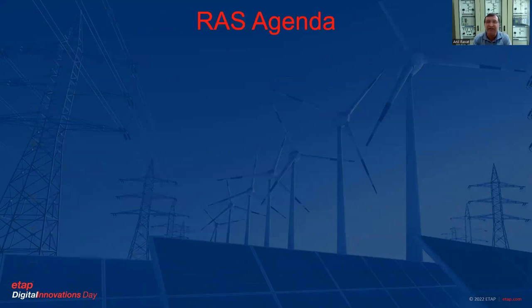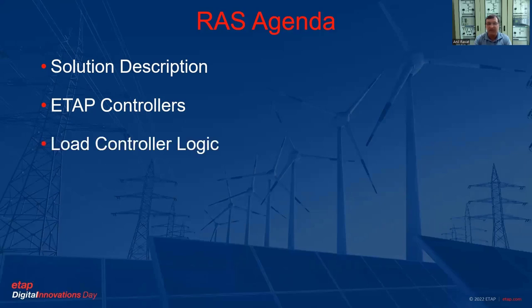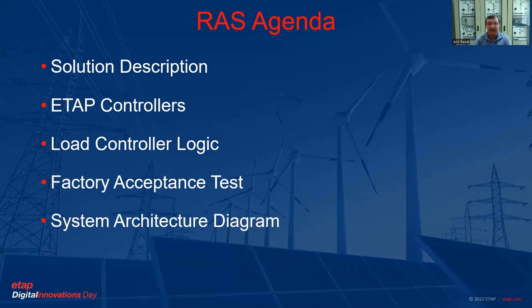We will also go through another project which is similar to this one, called the Remedial Action Scheme. This was implemented for the 220 kV line interconnections during emergency or contingency situations. We will go through the solution description, how we designed the load control logic, and how we achieved this through factory acceptance testing.